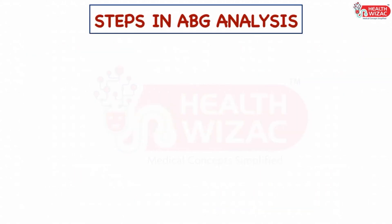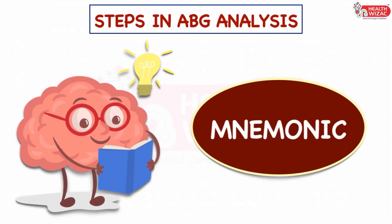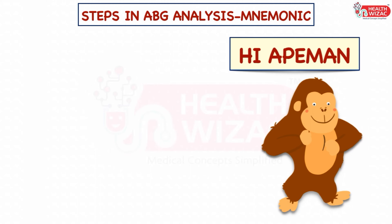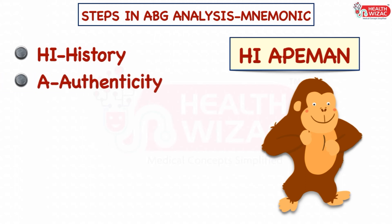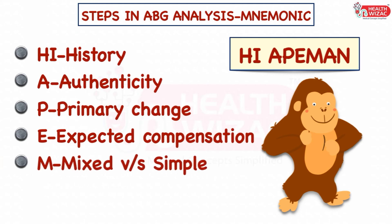Now let's learn the steps in ABG analysis. To remember these steps long term, I have designed a simple mnemonic called High Ape Man, easily remembered by visualizing a monkey or ape man. HI stands for history, A stands for authenticity, P stands for primary change, E stands for expected compensation, M stands for mixed versus simple disorder, and AN stands for anion gap.